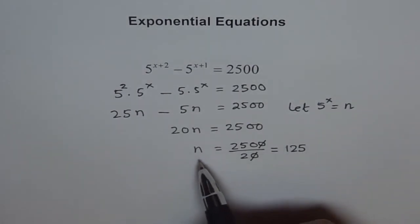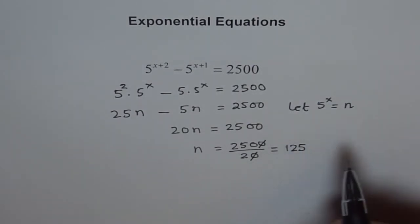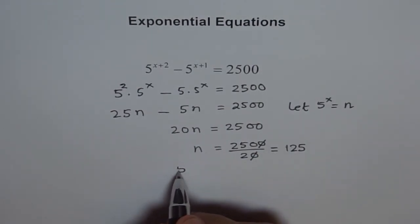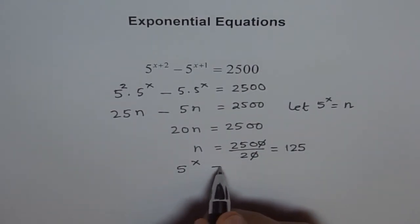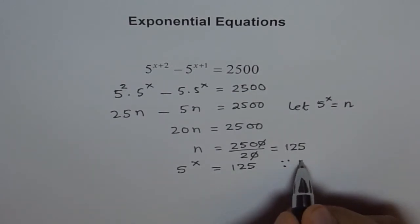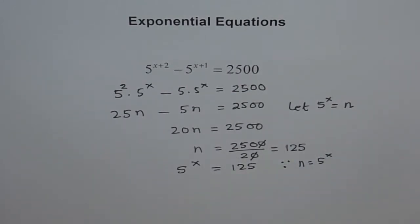Now we know what is n. n is 5 to the power of x. So we can write 5 to the power of x as 125. So we say 5 to the power of x equals to 125, because n is 5 to the power of x.